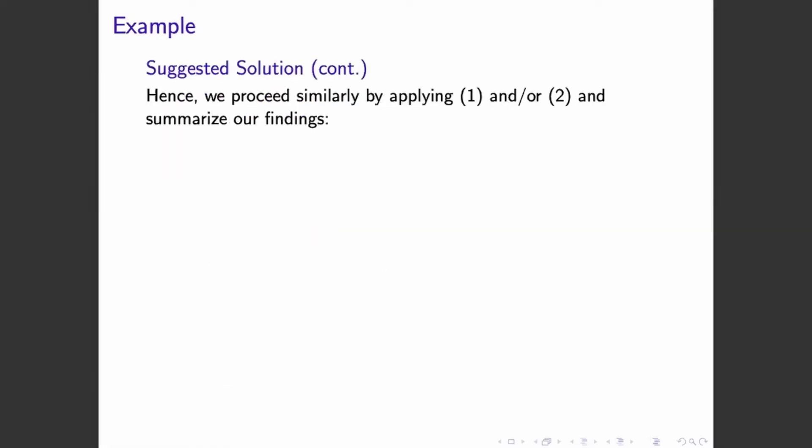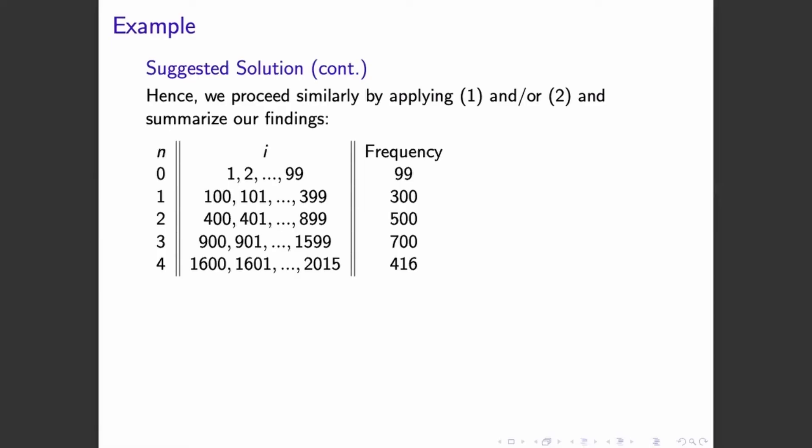So we can just continue to proceed until we get to 2015 for our i, and we will be able to get this. n will be equal to 2 for 500 values of i. n will be equal to 3 for 700 values of i. And lastly, n will be equal to 4 for 416 values of i. Notice here that we are stopping at 2015. If our summation will continue, the n equals 4 case will end with 2,499, assuming our index of summation reaches that.